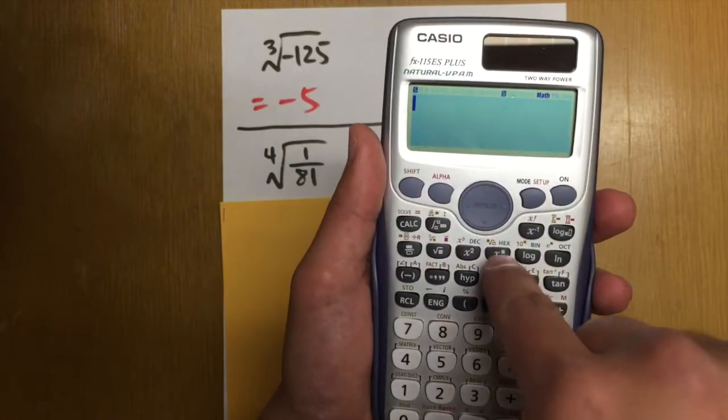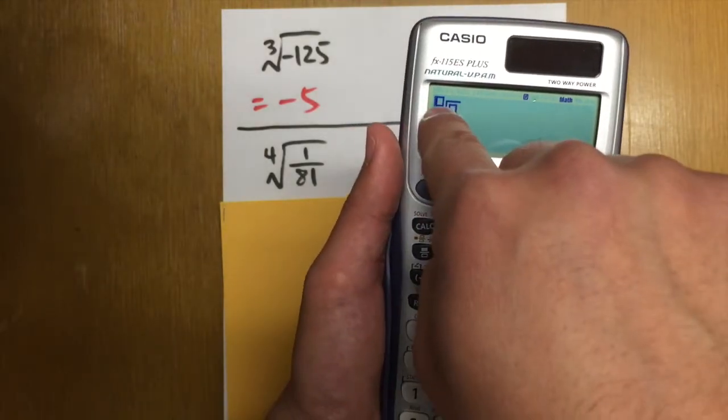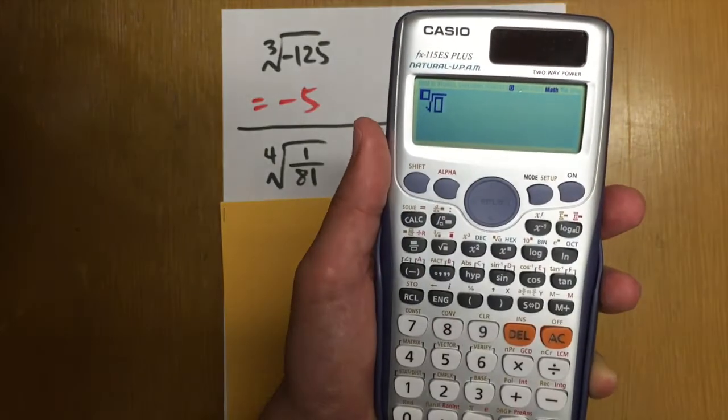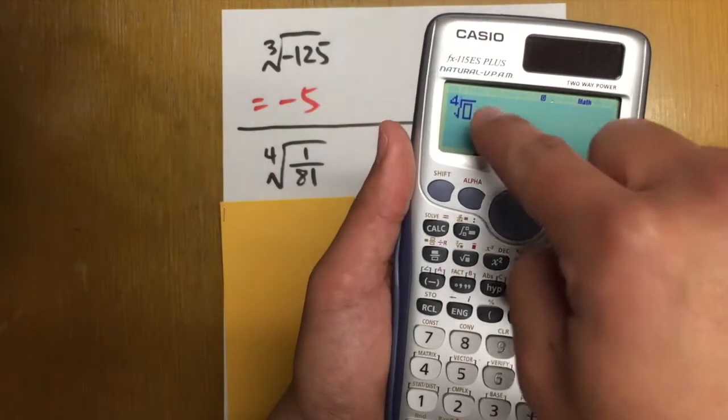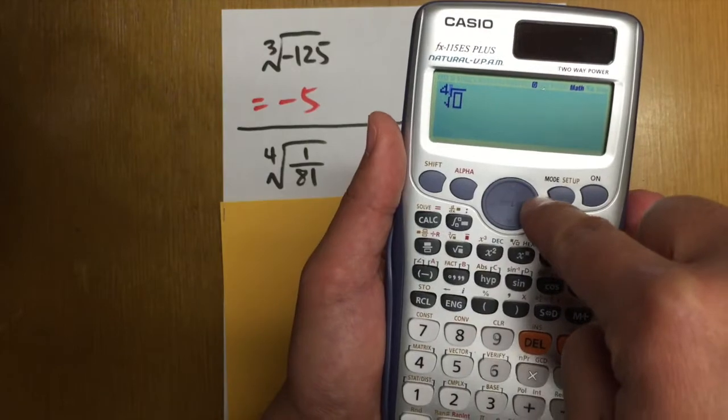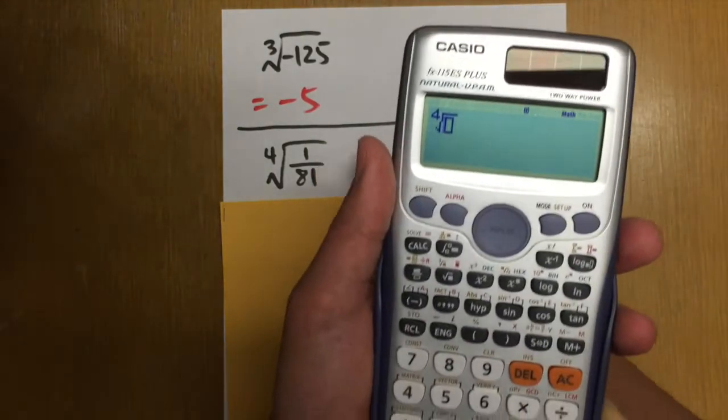First hit shift and then this key right here. This will allow you to enter any index for the radical. So right here, I'm going to put the 4 and then I have to move inside. So press the right key.